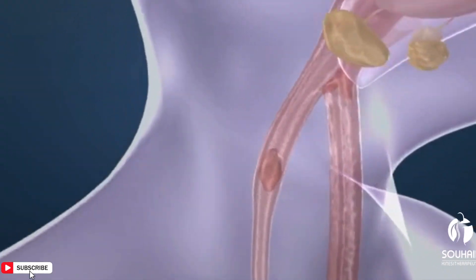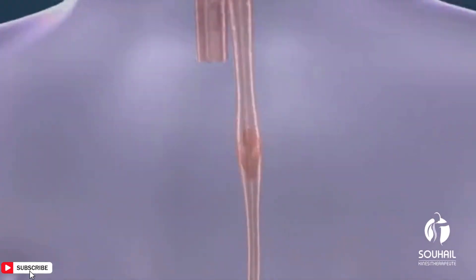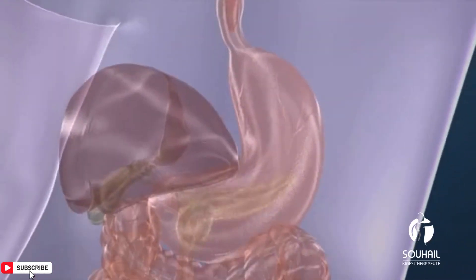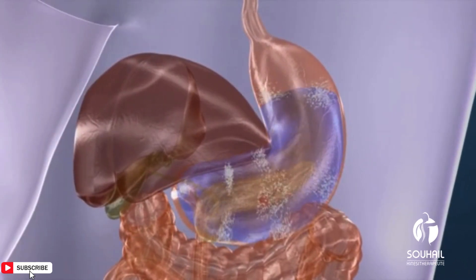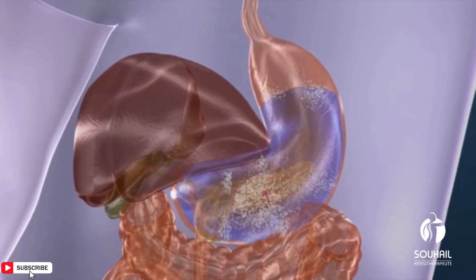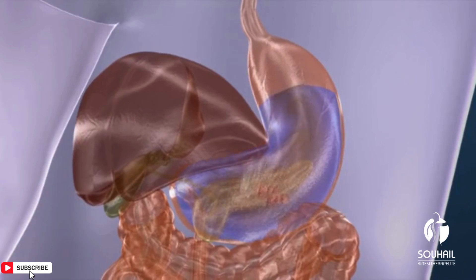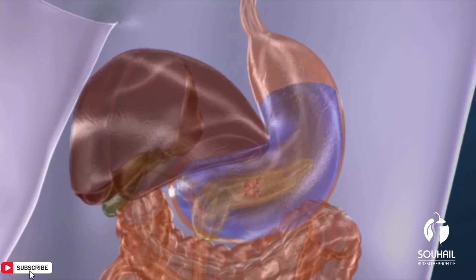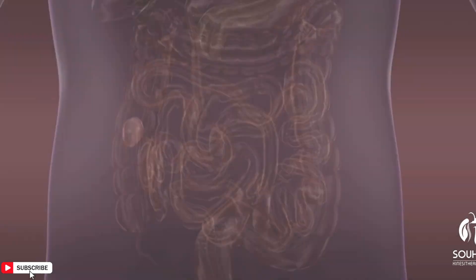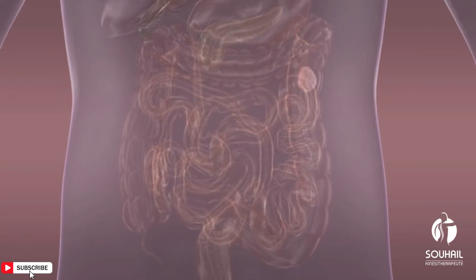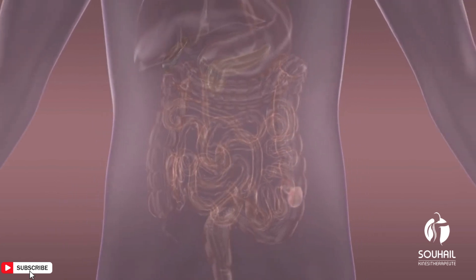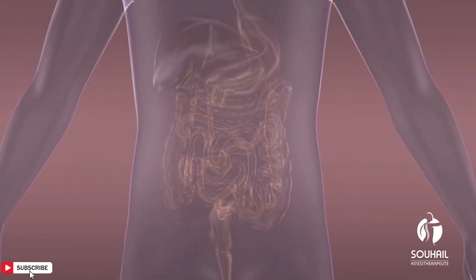The digestive system is a complex series of organs responsible for the ingestion, breakdown, absorption, and excretion of food and nutrients in the body. It plays a crucial role in converting food into energy and essential nutrients that the body needs to function properly. Here's a brief overview of the main components and functions of the human digestive system.